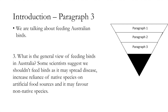In paragraph three we get even more specific. What we're actually talking about in this study is feeding Australian birds — artificially feeding them. So we're not just talking about birds globally or birds in Australia; we're talking about birds feeding in Australia. We may want to introduce the general view on feeding birds: is it good or bad? Some scientists suggest we shouldn't feed birds as it may spread disease, increase reliance on artificial food sources, and may favor non-native species.